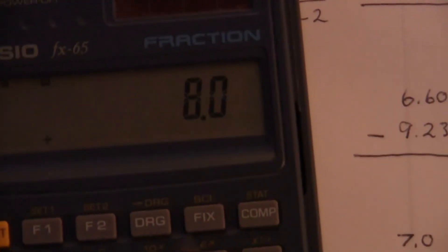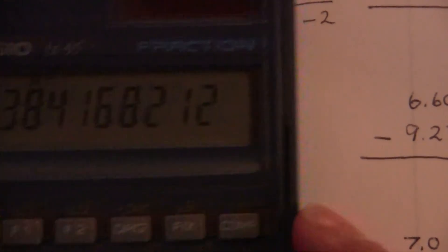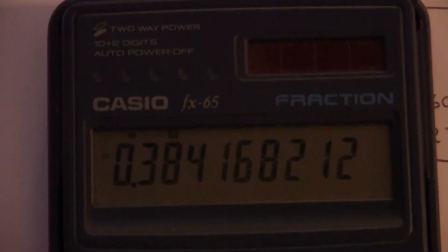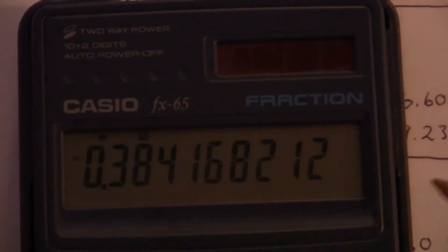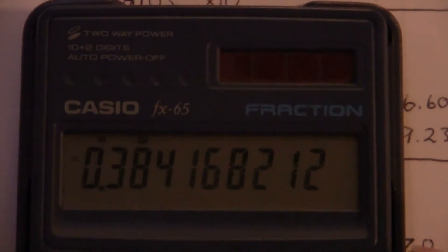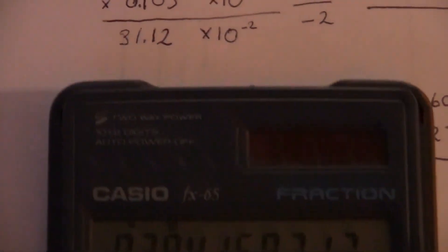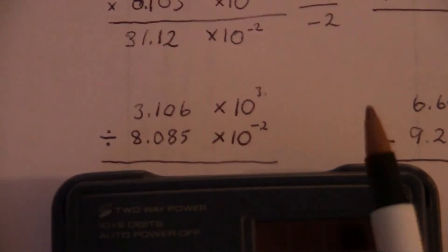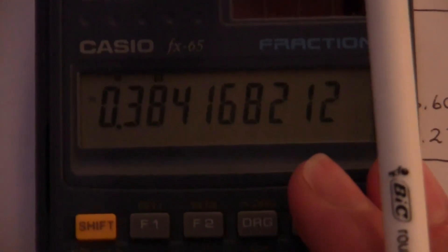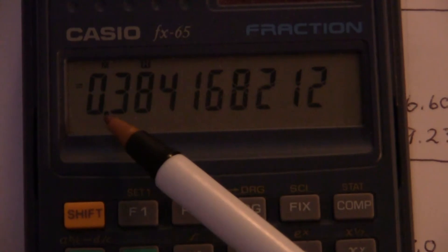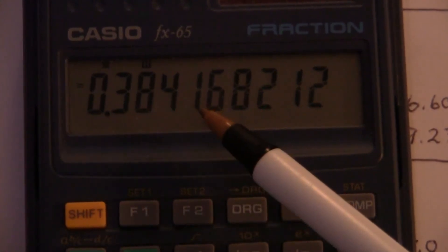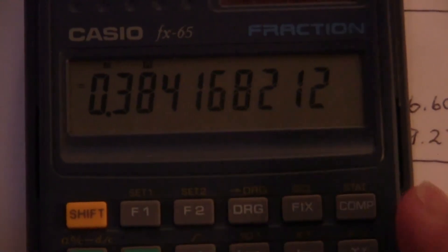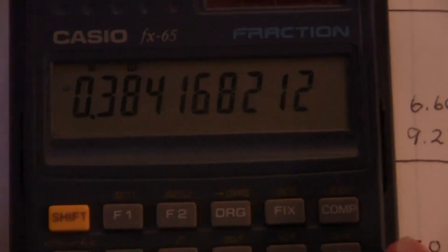And we have 0.384. And we have lots of numbers there. We really don't need that many. Since we have four digits in each of these, let's just keep four digits here. Excluding that first zero. So we'll go 0.384 and then this we're going to round up because this is 5 or greater. So 0.3842.